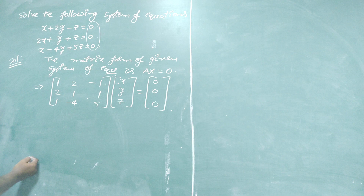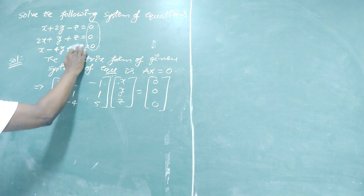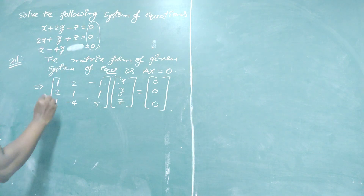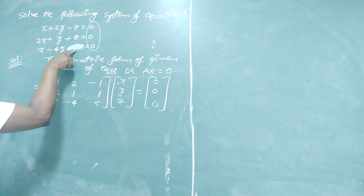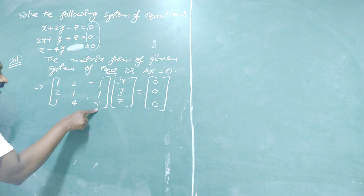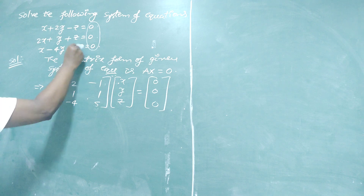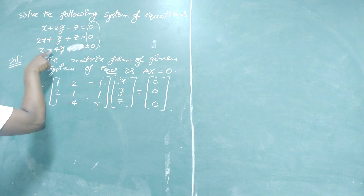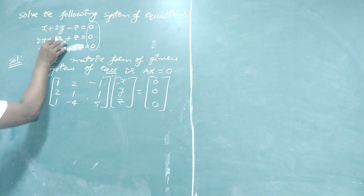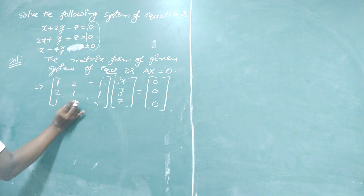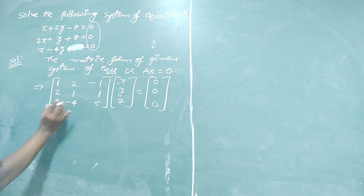One more important thing: suppose any equation does not contain a particular variable — for instance, if Z is missing, then instead of the coefficient of Z, you should replace it by 0. Similarly, if Y is not present in the equation, then the Y coefficient is 0. Don't forget it.